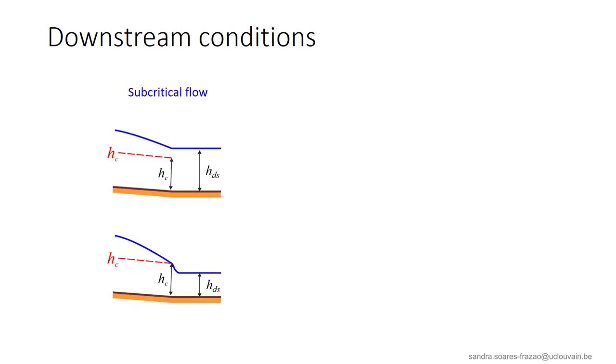In the case of a subcritical flow, we have seen that a direct connection with the downstream water level corresponding to a water depth HDS larger than the level corresponding to the critical depth HC is possible. If the downstream level decreases in such a way that the depth HDS becomes smaller than HC, a direct connection is no more possible.